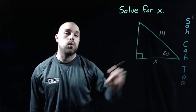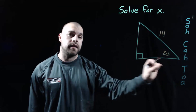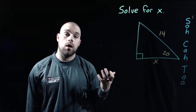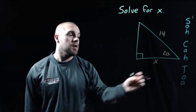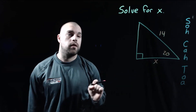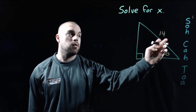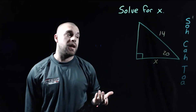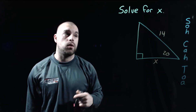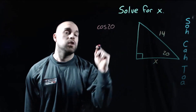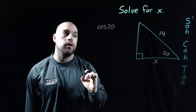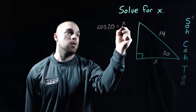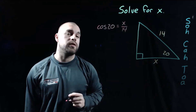In our next example, we've got a 20-degree angle. Our X is the side across the bottom and 14 is going to be the hypotenuse. We need to figure out which trig ratio to set up. X is adjacent to the 20-degree angle and 14 is the hypotenuse, so cosine uses adjacent and hypotenuse — we need to set up a cosine equation. So we take the cosine of our 20-degree angle equals the adjacent side X over the hypotenuse 14.